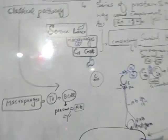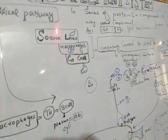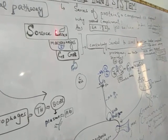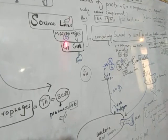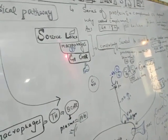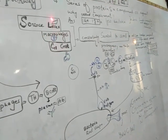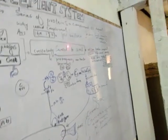The complement system proteins are produced in the liver — the liver produces complement system proteins — and macrophages also produce them. But complement system proteins were first produced in the GIT, the gastrointestinal tract. These multiple proteins are constantly produced by the liver, macrophages, and GIT.